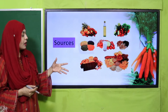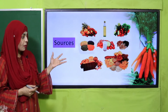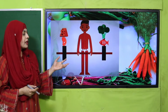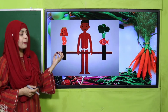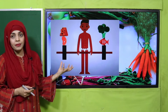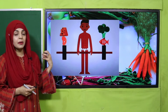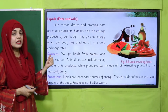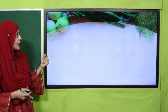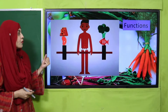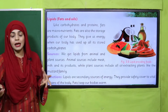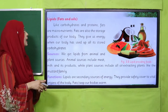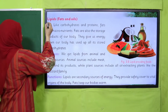These foods have proteins in them. Proteins make up our muscles and help us in growth. These are the functions of proteins. Now let's move towards the next important nutrient, which is lipids — fats and oils.